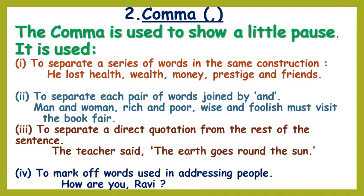Next, we have comma. The comma is used to show a little pause. It is used to separate a series of words in the same construction. For example: he lost health, wealth, money, prestige and friends. We usually use the word 'and' in place of a comma before the last word in a series or a list.